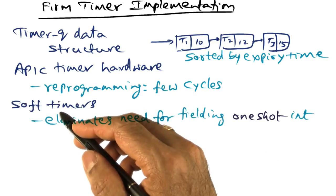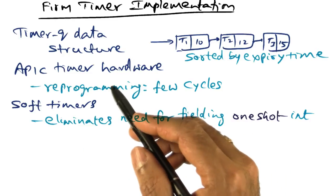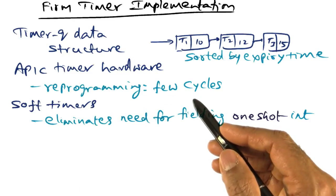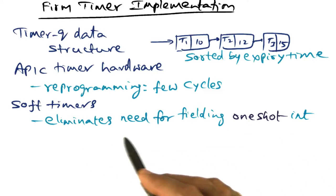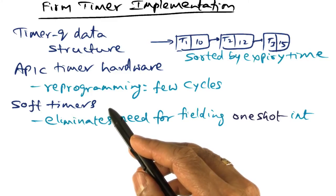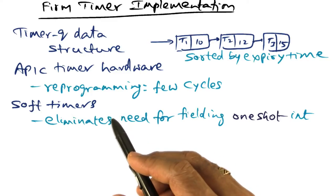As I already mentioned, by choosing an appropriate overshoot parameter in reprogramming the APIC timer, we can eliminate the need for fielding one-shot interrupts because of soft timers going off within that overshoot period.